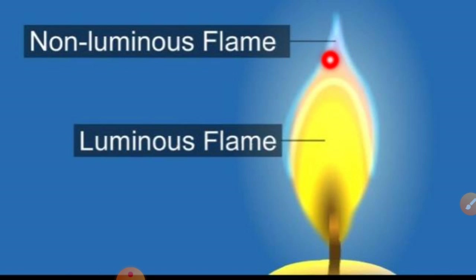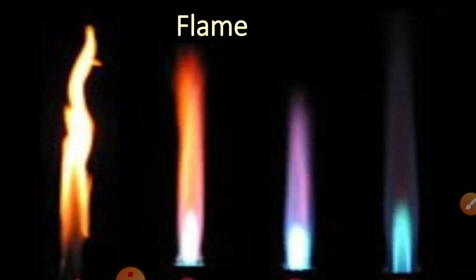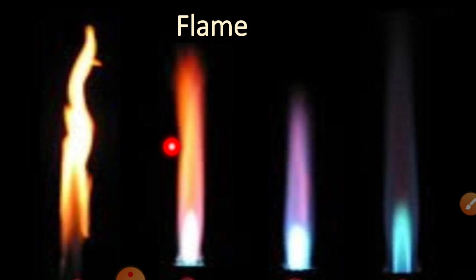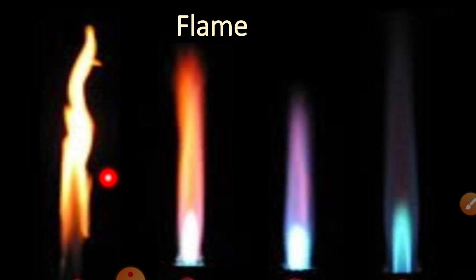From a Bunsen burner, you can see different flame colors: yellowish, orange, purple, and light yellow. The different colors depend on the flow of air through the throat holes — the holes on the sides of the Bunsen burner.